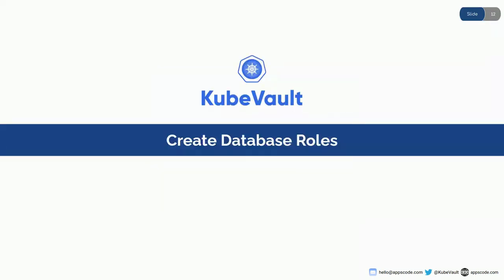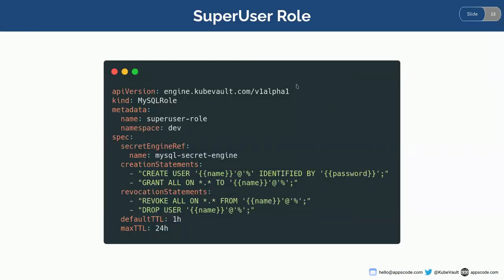Our secret engine is pretty much useless without any roles, so we're going to create some database roles. As I have enabled the MySQL secret engine, I'll create some MySQL roles — specifically a super user role and a read-only role. A MySQL role is basically a Kubernetes CRD that allows a user to create a database secret engine role in a Kubernetes-native way. When a MySQL role is created, the QVault operator creates a role according to the following specification.